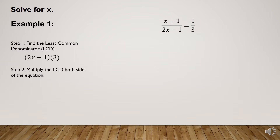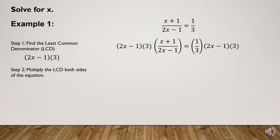Step number 2: Multiply the LCD to both sides of the equation. So we will now multiply both sides by the LCD. We have (2x - 1)(3) times (x + 1)/(2x - 1) equal to (1/3) times (2x - 1)(3).